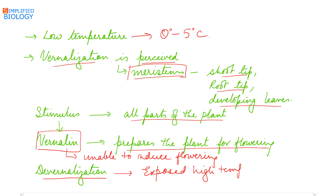When a vernalized plant is exposed to high temperature, de-vernalization occurs — that is, the vernalization is reversed.